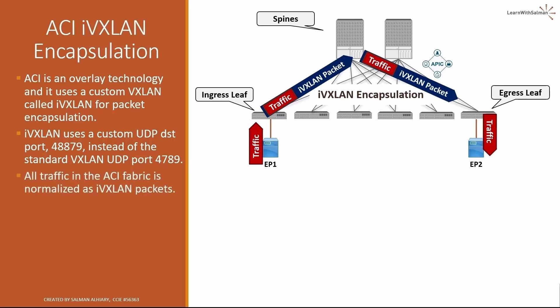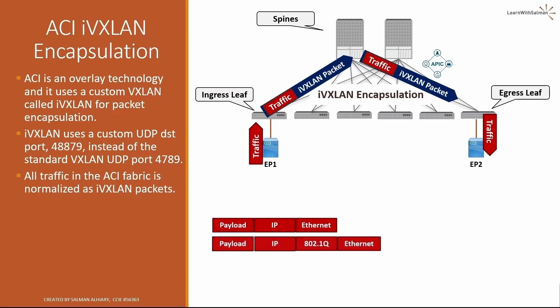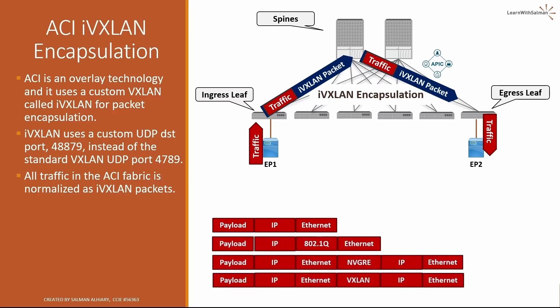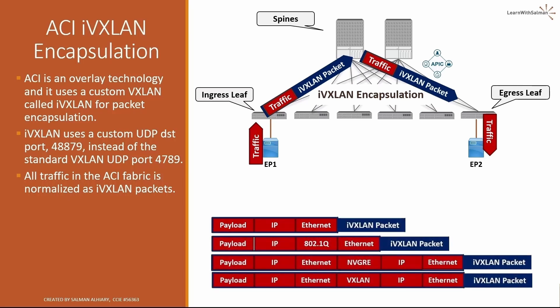All traffic that comes into the ACI fabric is normalized as IVXLAN packets at the ingress leaf. ACI encapsulates external N-tag traffic, VLAN-tagged traffic, VXLAN, and NVGRE packets into an IVXLAN packet. So whatever traffic is received by the ACI fabric, it will be encapsulated in the IVXLAN packet.